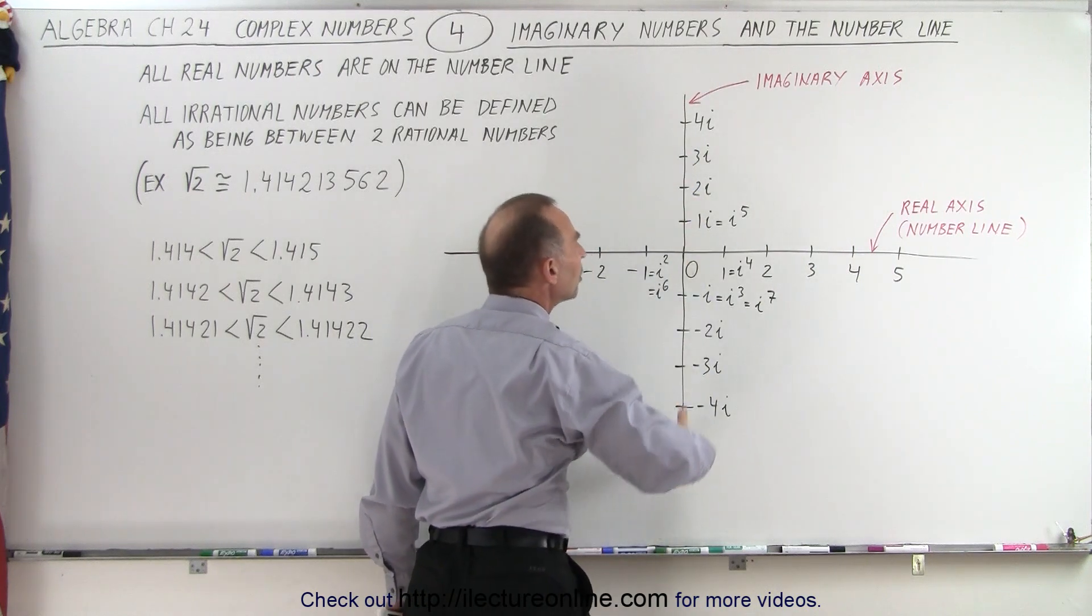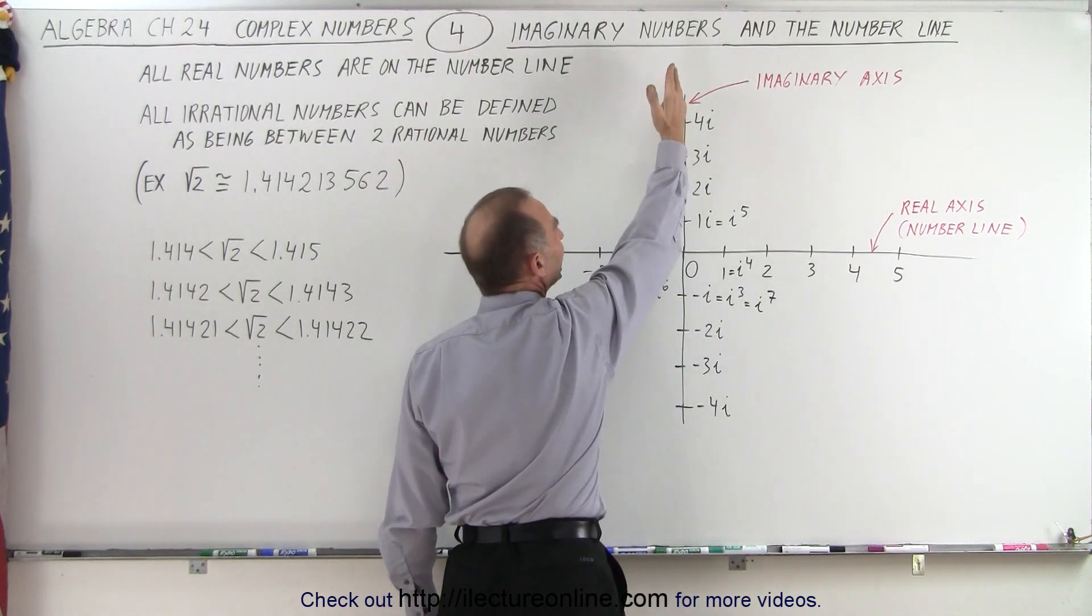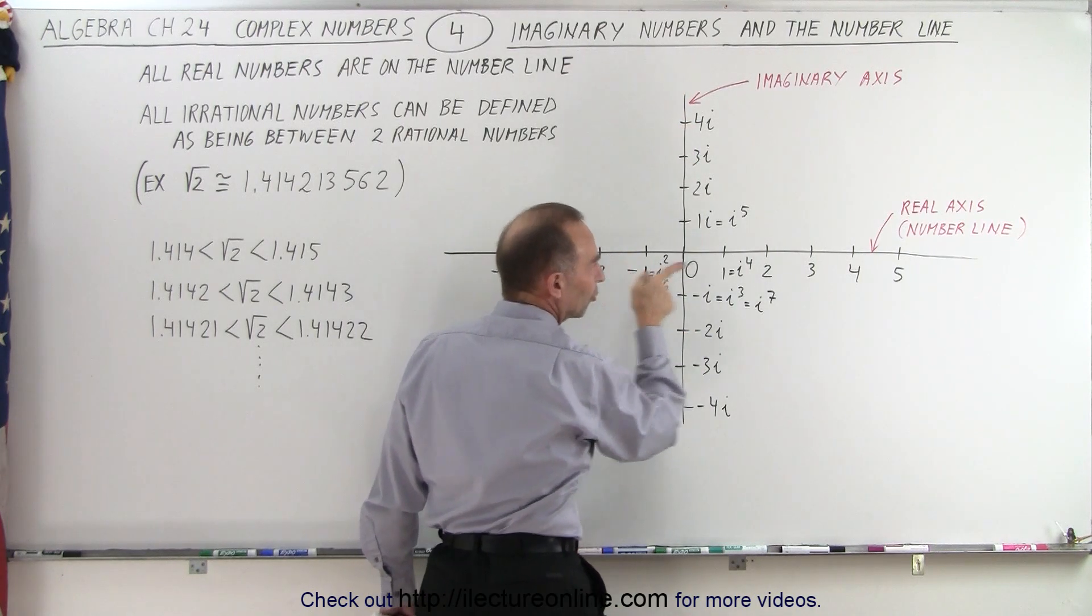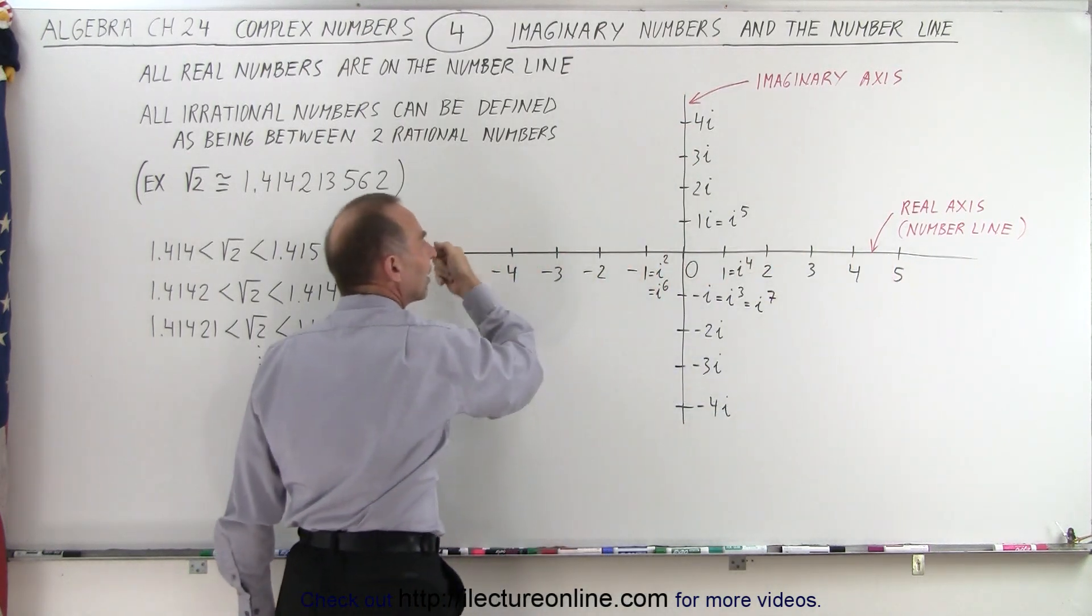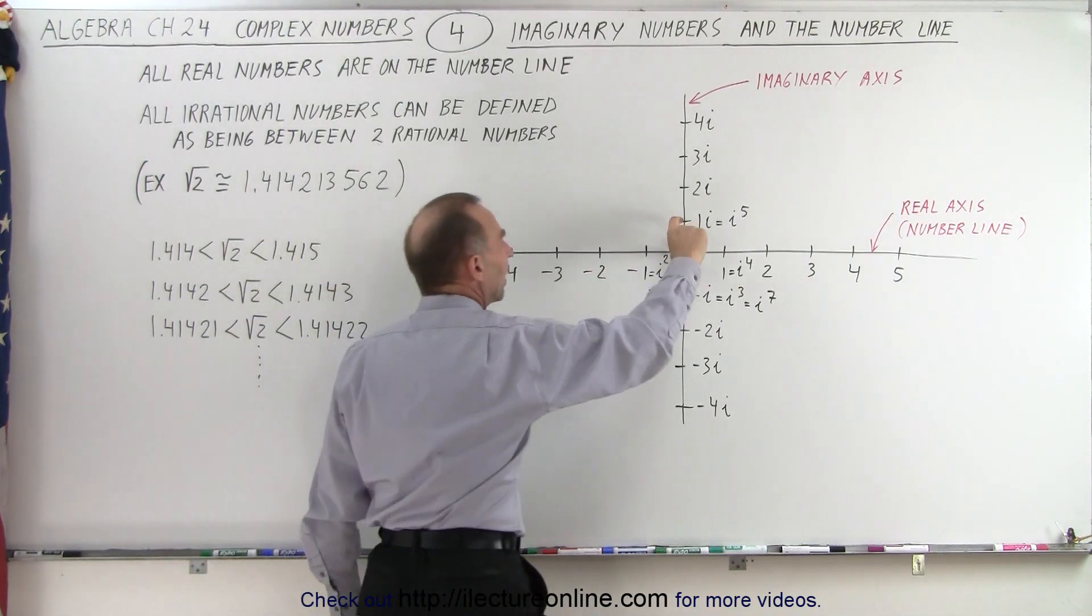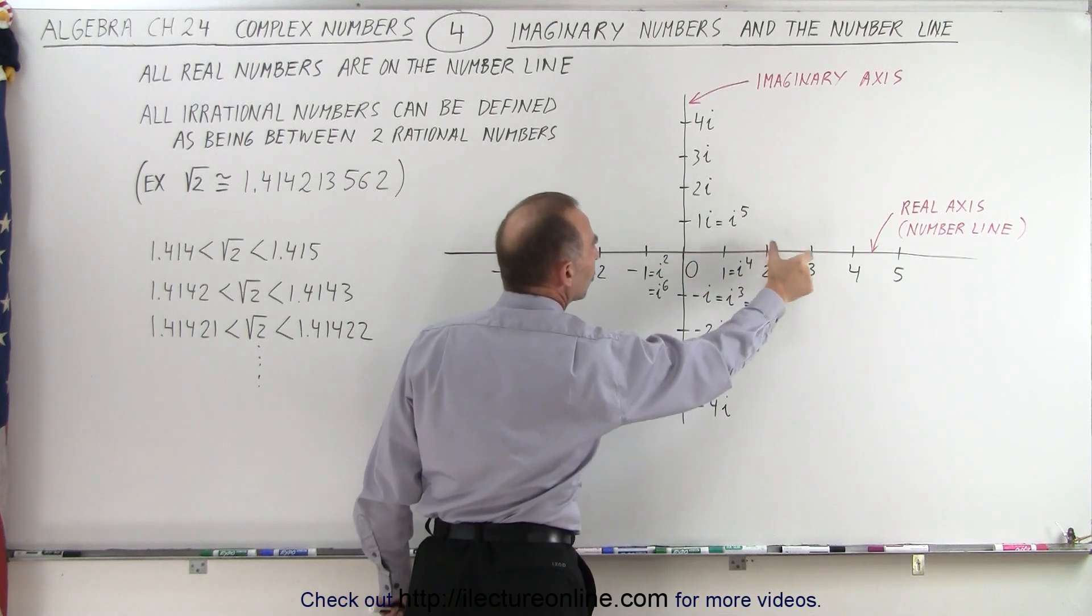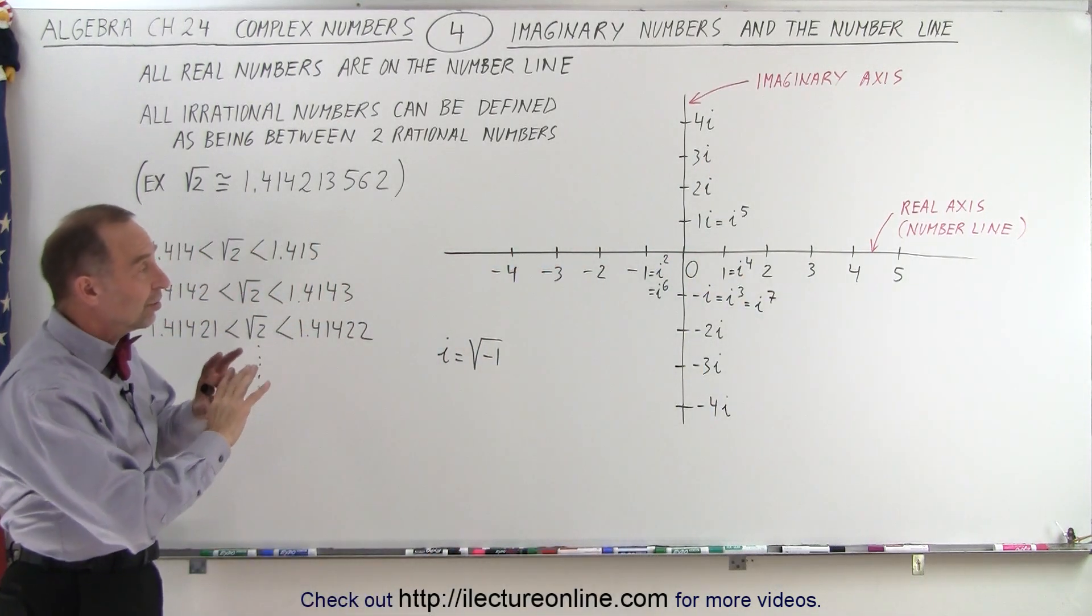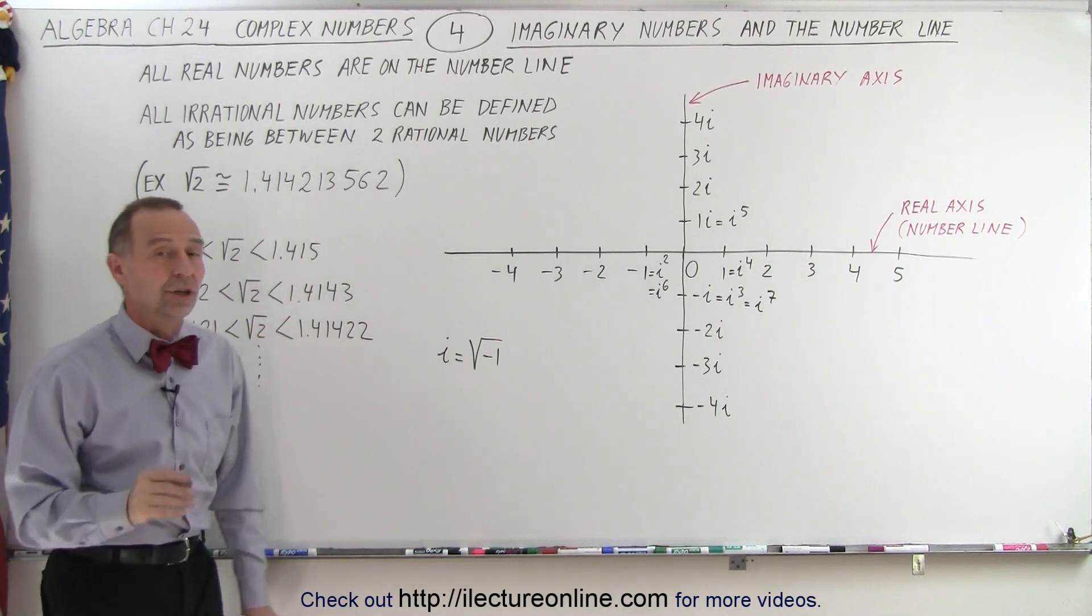And there we can place all the imaginary numbers, positive in this direction, negative in this direction. Just like the real numbers are positive to the right and negative to the left. And the units are the same. We have 1i, 2i, 3i, just like we have 1, 2, and 3 on the real number line. And so now at least we can see we can graph imaginary numbers.